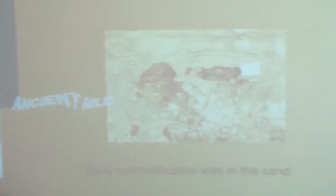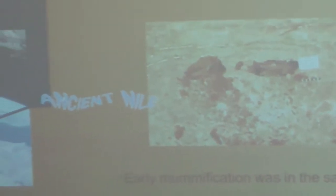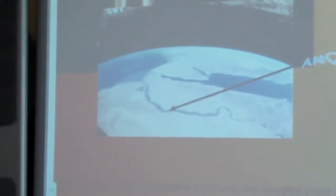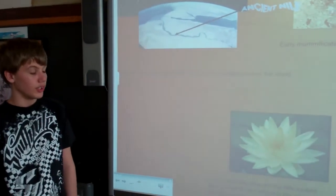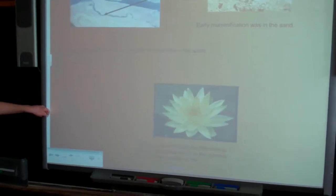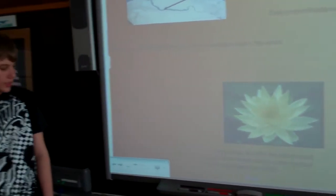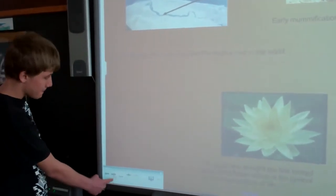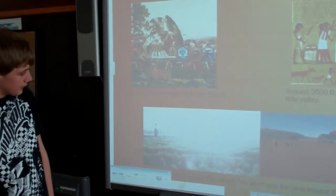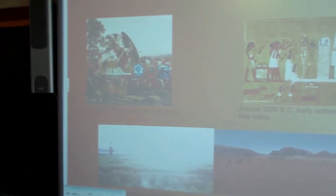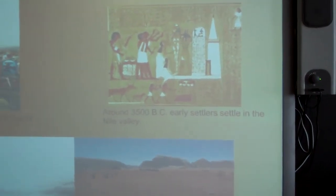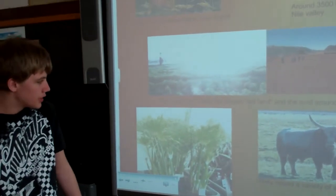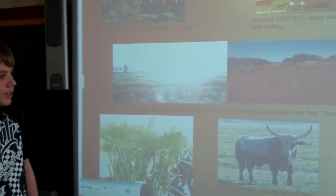Early mummification was in the sand. The Nile River is over 4,000 miles long, and it's the longest river in the world. The Egyptians thought the Nile looked like a lotus flower, which represents the symbol for the regeneration of life. In 525 BC, the Persians took over Egypt. Around 3500 BC, early settlers settled in the Nile Valley. The Egyptians called the desert Redland and the land around the Nile Blackland.